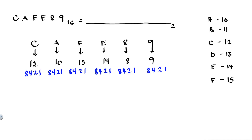12 is the sum of 8 and 4, so under 8 and 4 we put 1, and we don't use 2 and 1, so those are 0. The binary equivalent of 12 is 1, 1, 0, 0. 10 is the sum of 8 and 2, so we put 1 under 8 and 1 under 2, and we don't use 4 and 1. So 10 is equivalent to 1, 0, 1, 0 in binary.